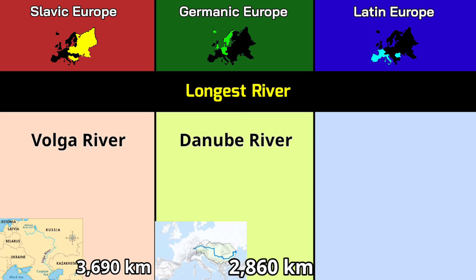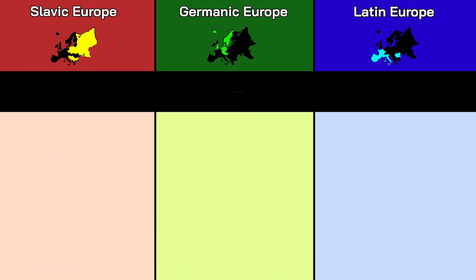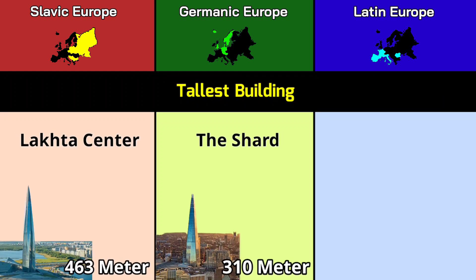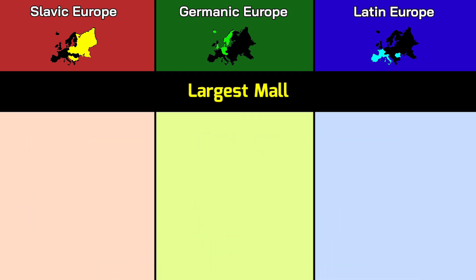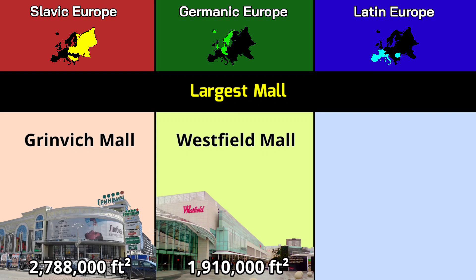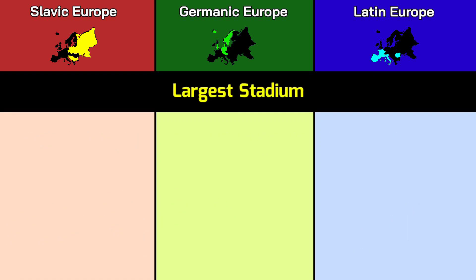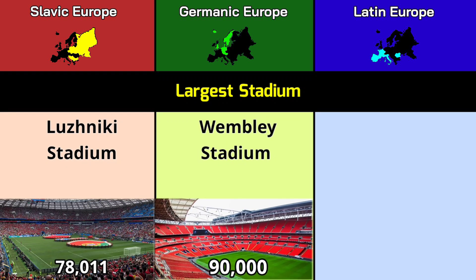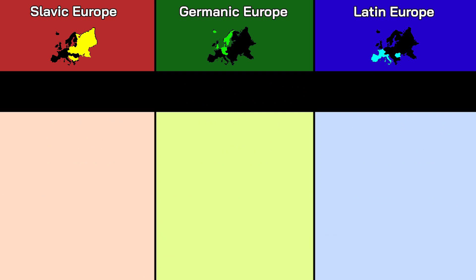Longest river: Volga River 3,690 kilometers, Danube River 2,860 kilometers, Danube River 2,860 kilometers. Tallest building: Lakhta Center 463 meters, The Shard 310 meters, Tour Crystal 249 meters. Largest mall: Greenwich Mall 2.78 million square feet, Westfield Mall 1.9 million square feet, Puerto Venecia 2.2 million square feet. Largest stadium: Luzhniki Stadium 78,011, Wembley Stadium 90,000, Camp Nou Stadium 99,354.